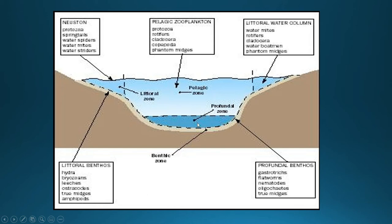The profundal zone is the very deep zone. Sometimes in lakes this could be a hypoxic or anoxic region depending on what goes on with the lake in terms of mixing. Profundal benthos includes gastrotrichs, flatworms, nematodes, oligochaetes, and midges. In the littoral water column you get water mites, rotifers, cladocera, and water boatmen. In the pelagic zone: plankton, protozoa, rotifers, cladocera, copepods, and phantom midges. There are some similarities between littoral and pelagic since both are considered open water areas.